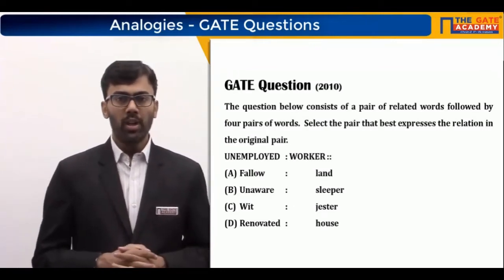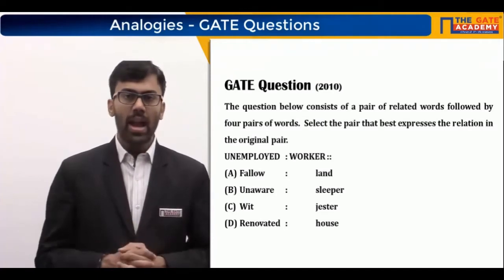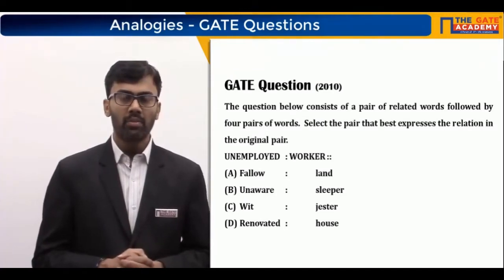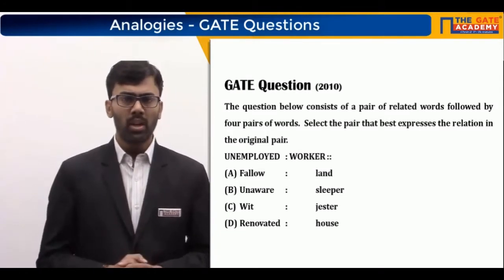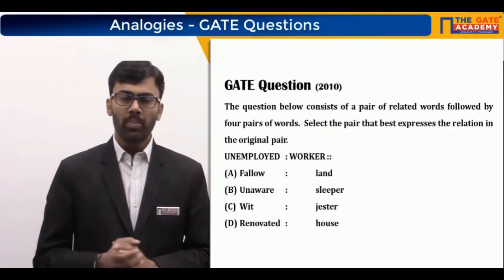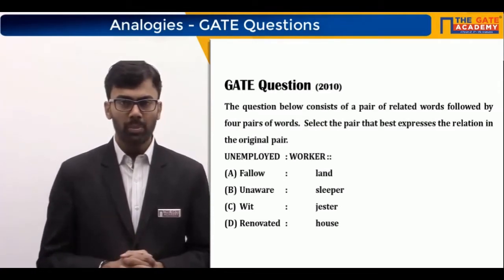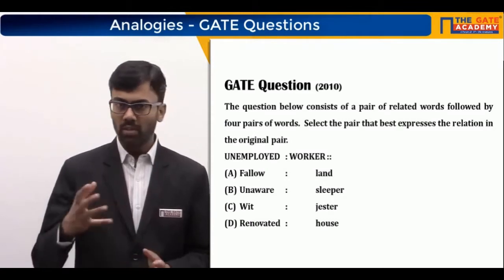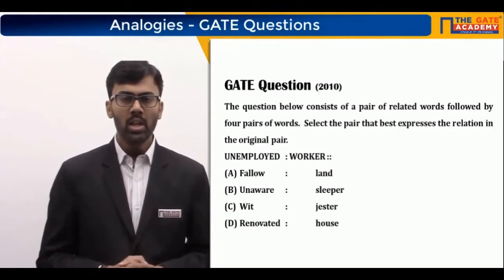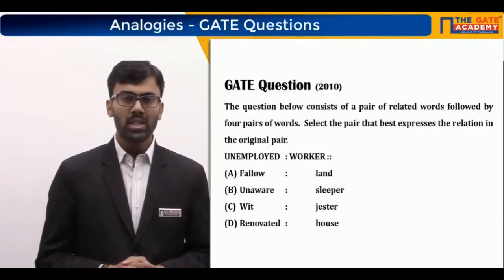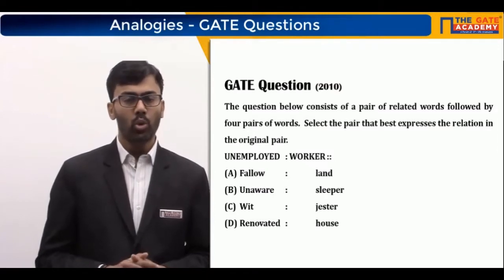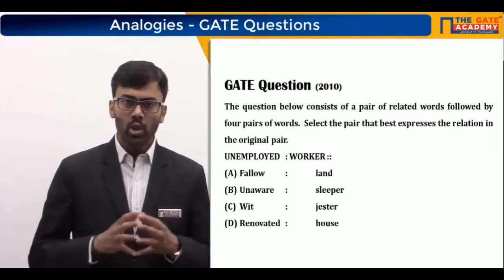As discussed in the earlier segment on analogies, an original pair of words is given which has a certain type of meaning, and then four or five options are given. Here, four options are given, and we have to select the option in which the pair of words has a very similar or same type of relationship as the original pair.